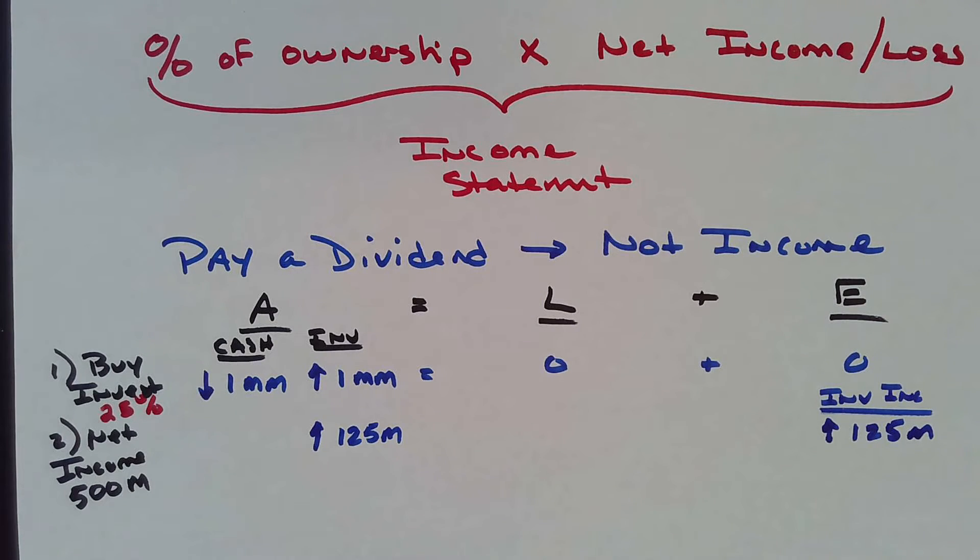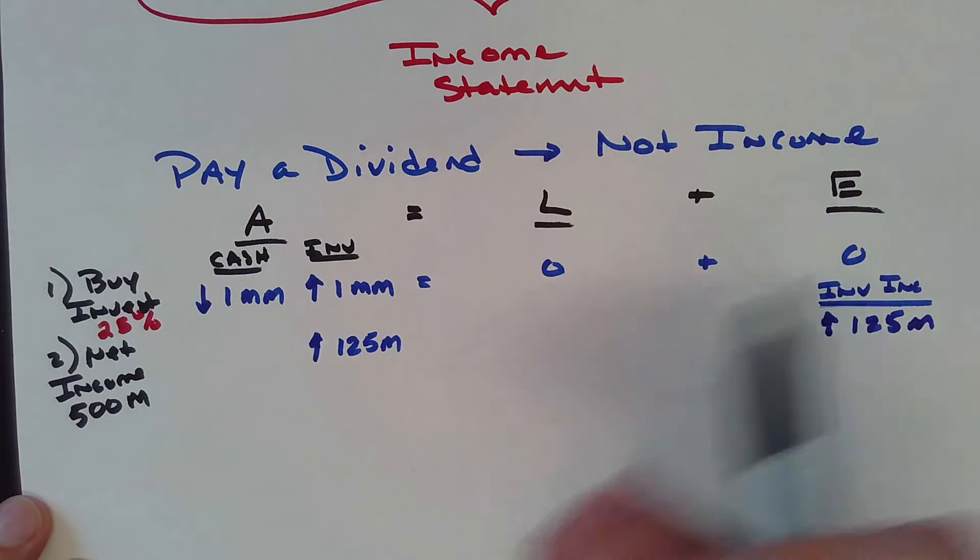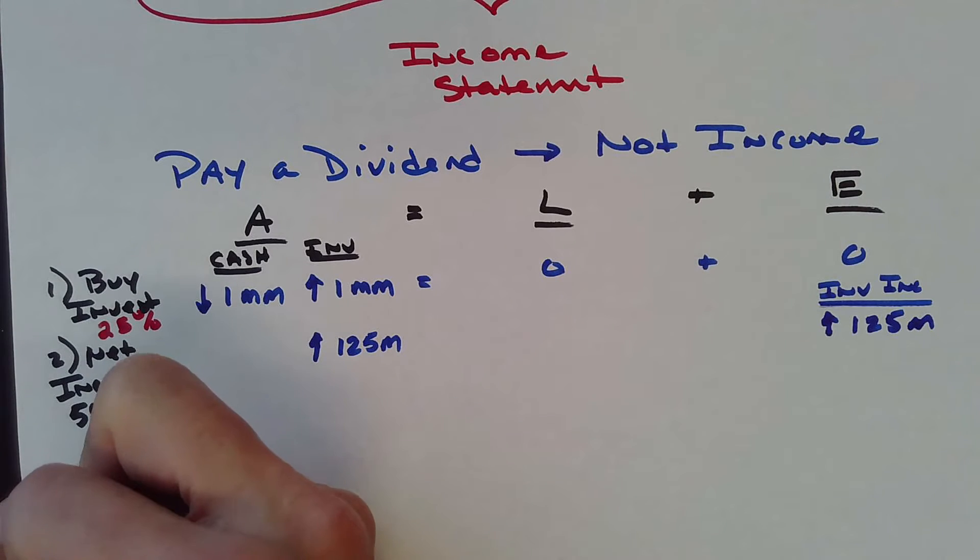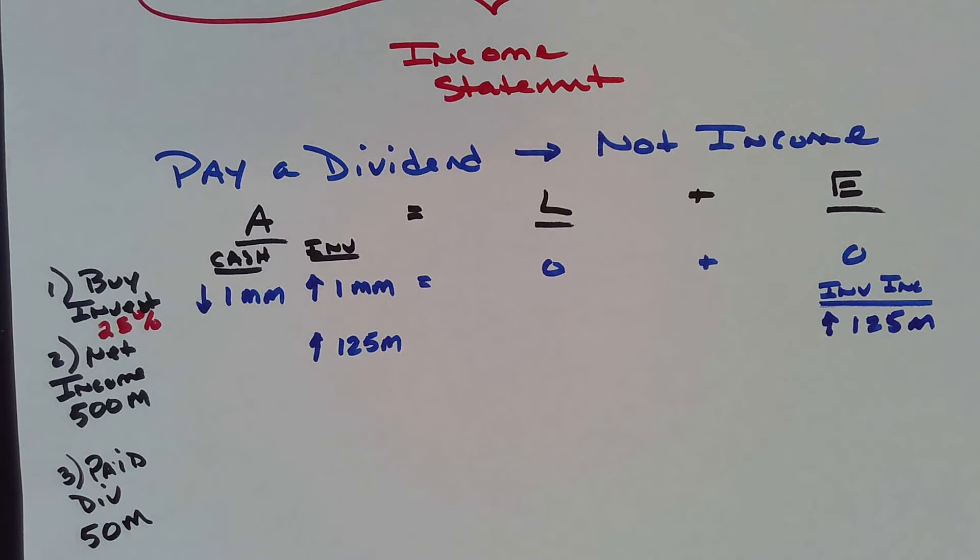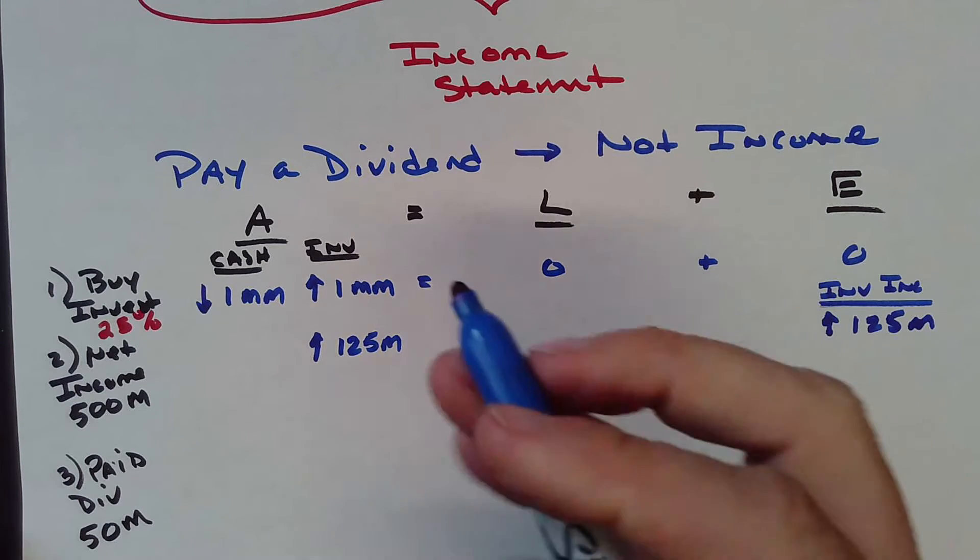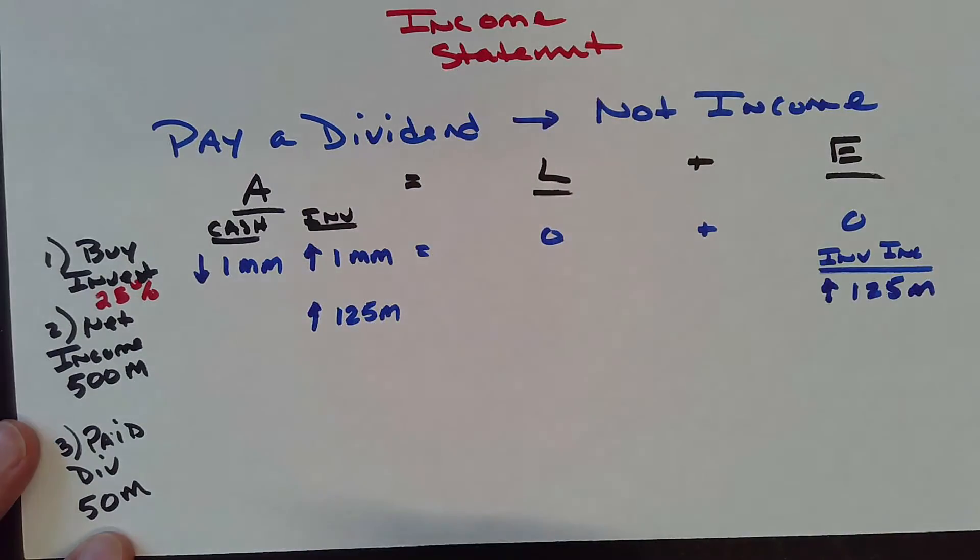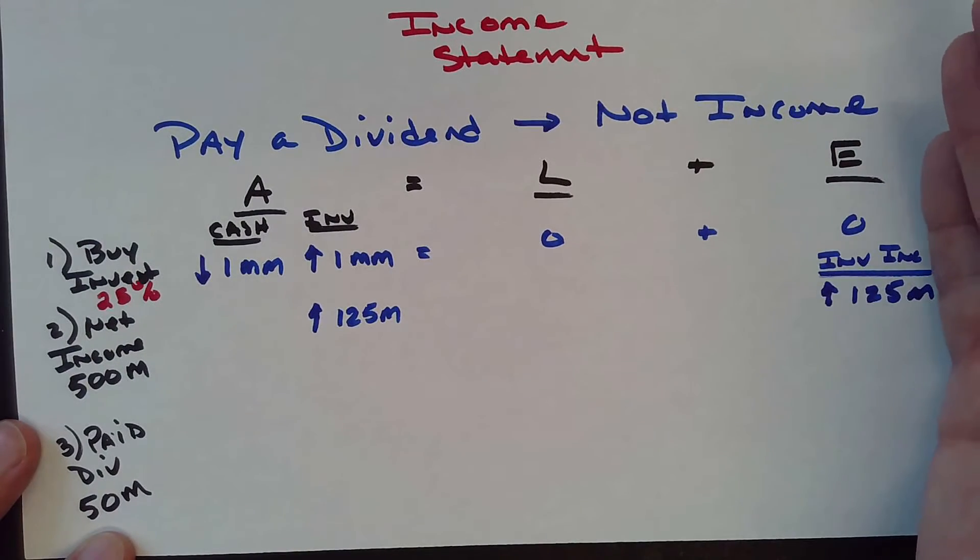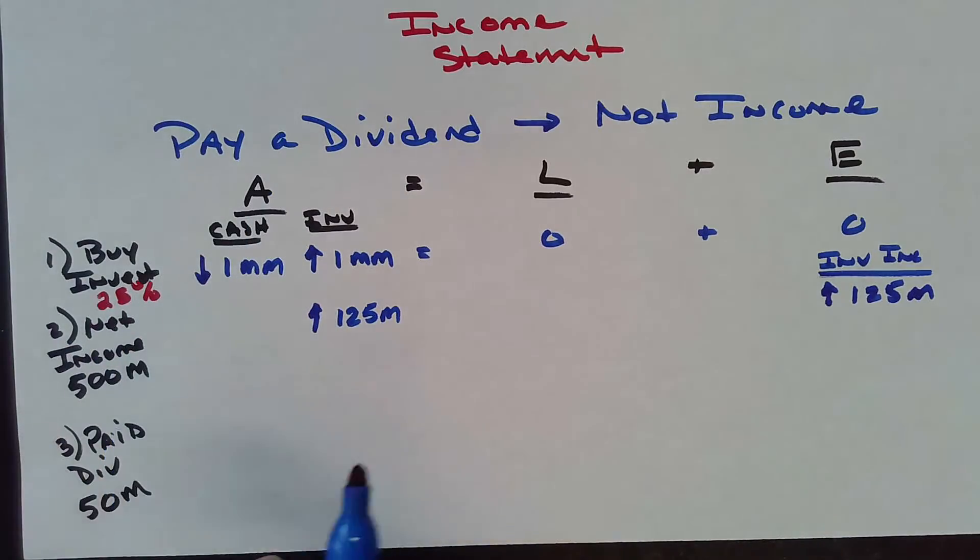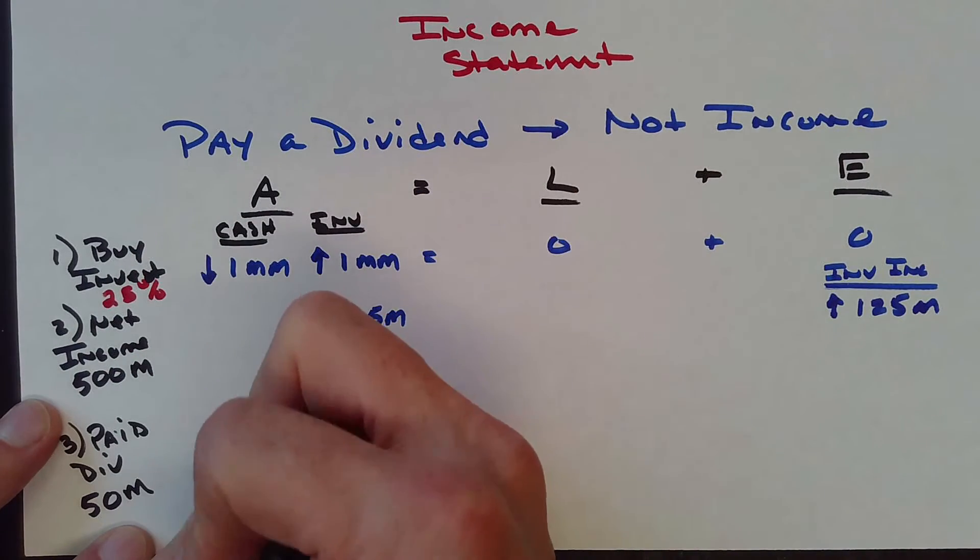The company also decided to pay a dividend out of their retained earnings. I received $50,000. If they pay me a dividend, their equity is going down because they're giving me back some money. Therefore, my investment should also go down.